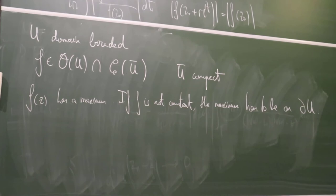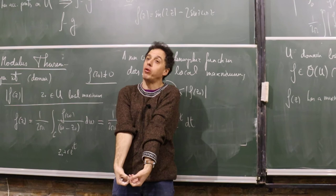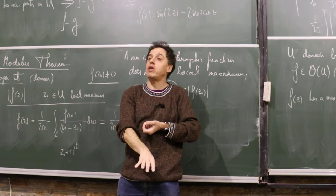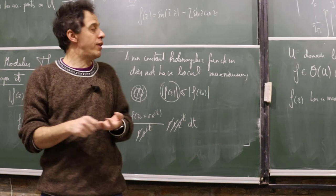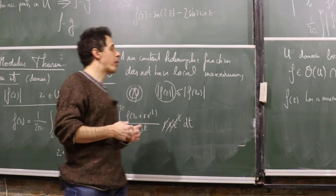This is useful in practice: if you have a holomorphic function on a bounded open set U that extends continuously to the boundary, and you know a bound for |F| on the boundary, then you know a bound for |F| in the interior. In fact, the modulus in the interior is strictly less than the maximum on the boundary.